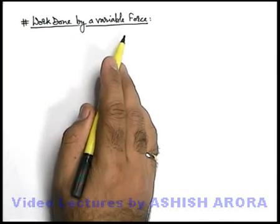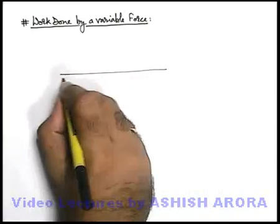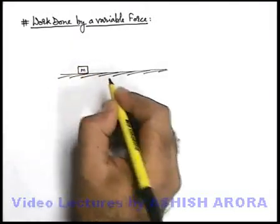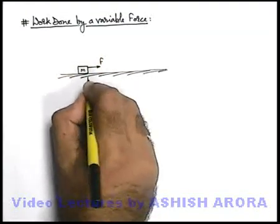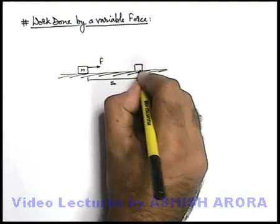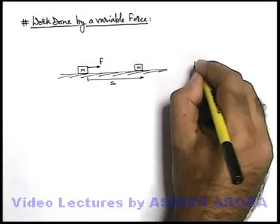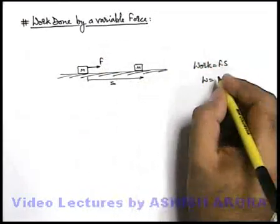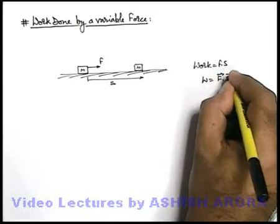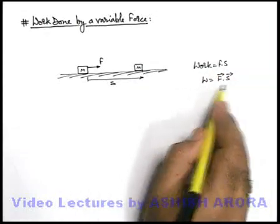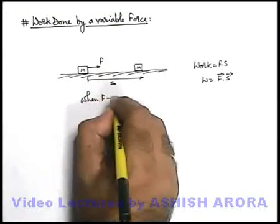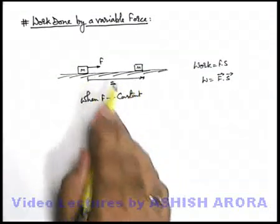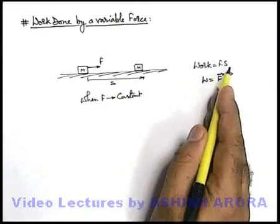Students, let's discuss work done by a variable force. As we already studied, whenever a force is applied on a body and it produces some displacement, we say work is done. If this body is pulled by a force F and displaced by displacement S, we simply say work equals F times S. If the force is applied in a different direction it can be written as F dot S. This relation can only be used when force is constant throughout the motion.